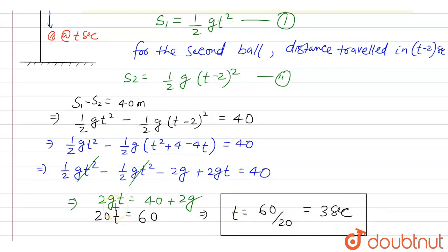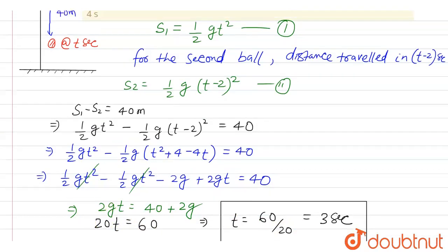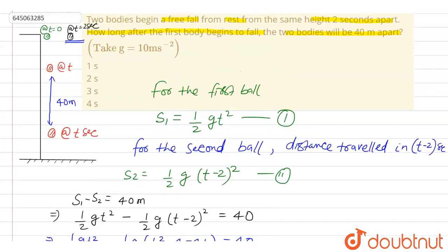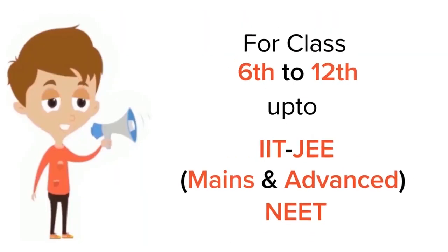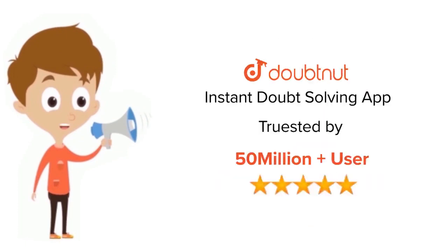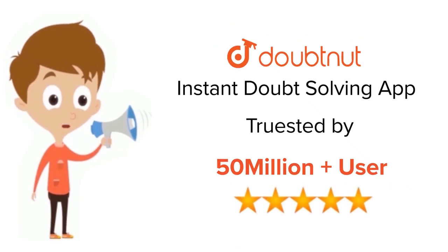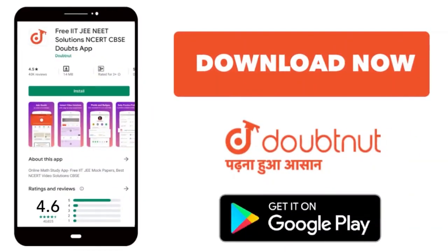The correct answer is the third option: 3 seconds. I hope you clearly understood the problem. Thank you. For class 6 to 12, IIT JEE and NEET level — trusted by more than 5 crore students — download the Doubtnut app today.